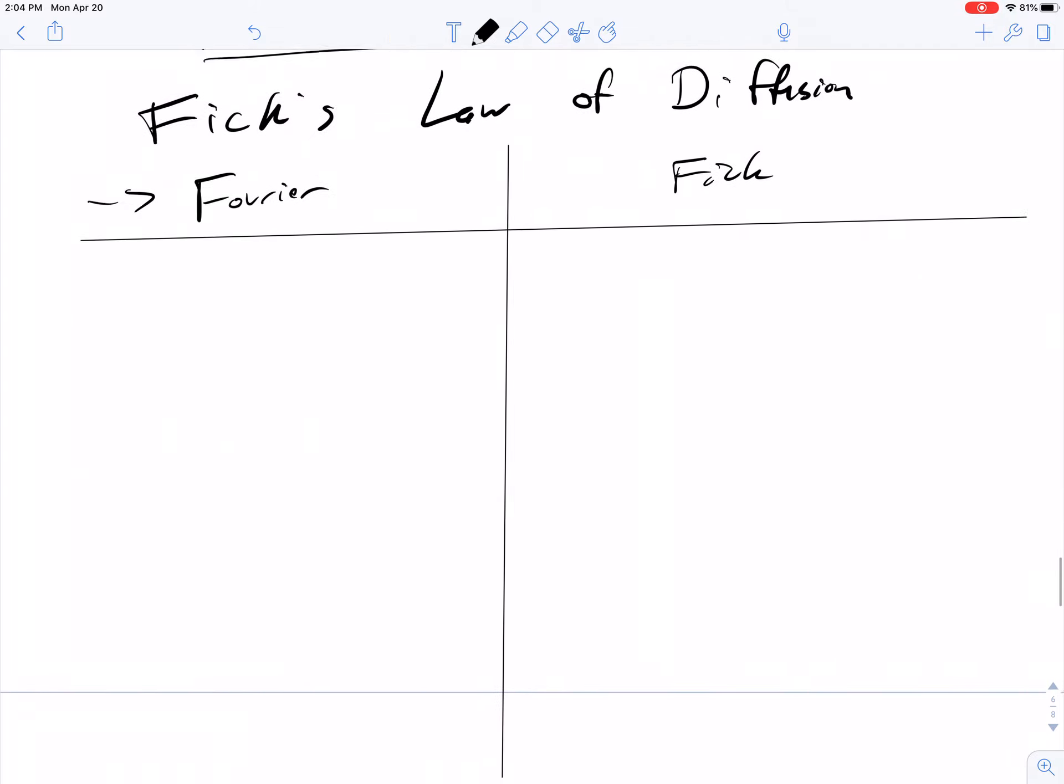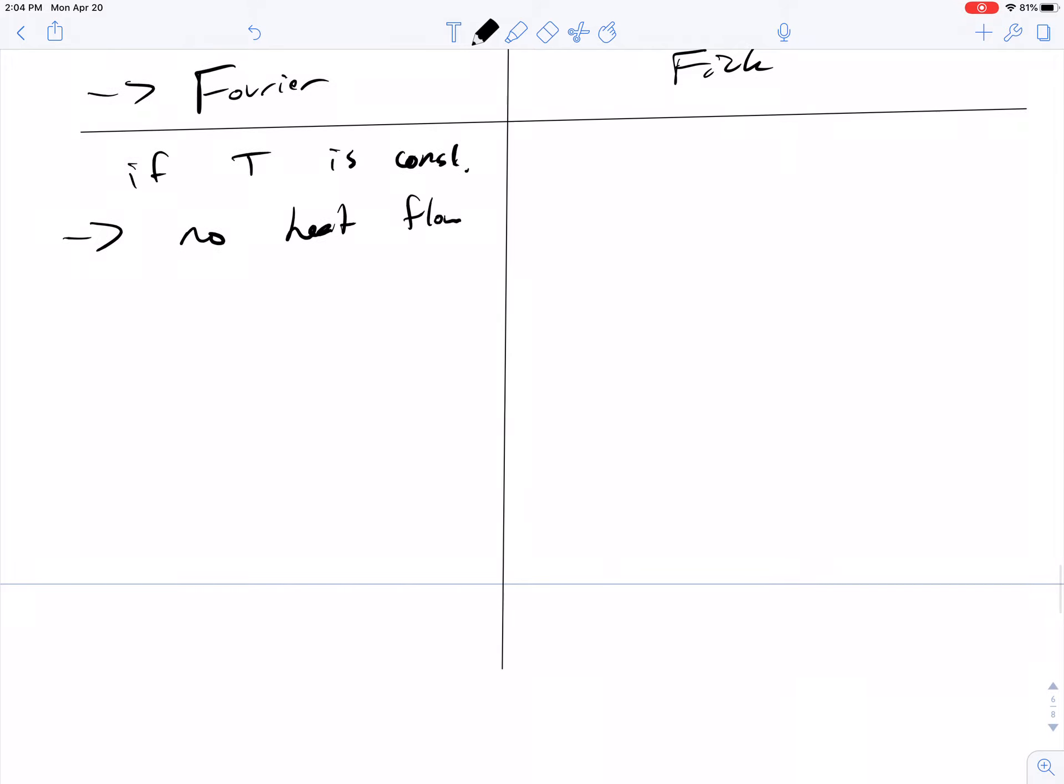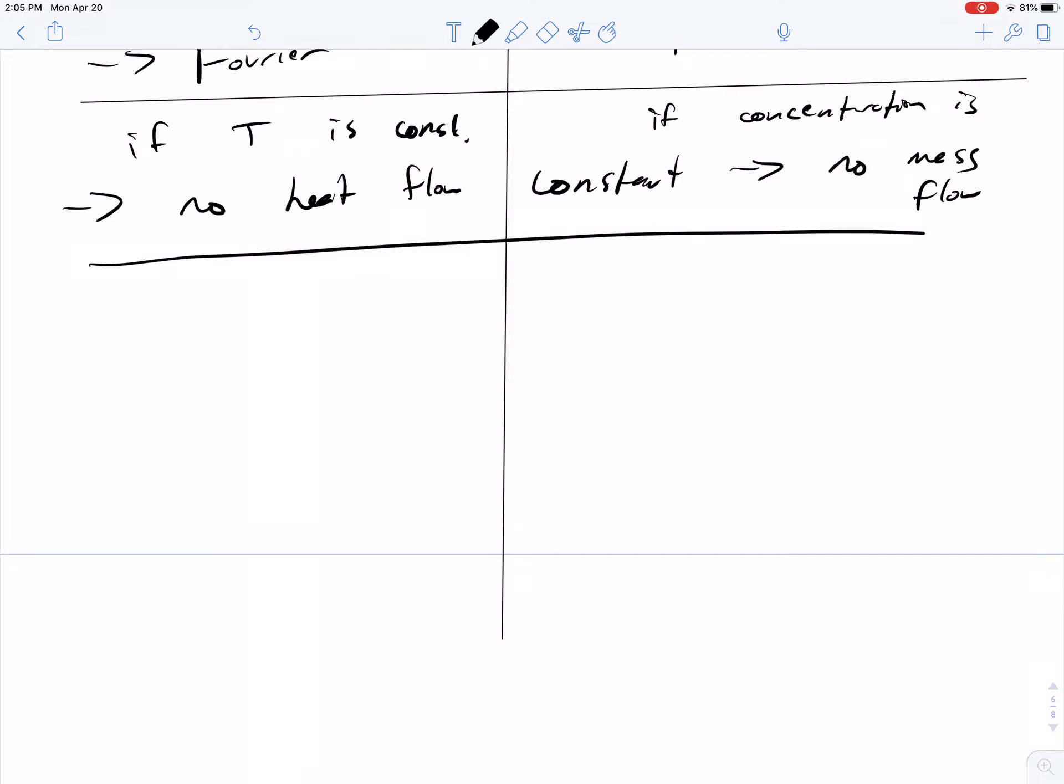Fourier noticed that if T is constant, there's no net heat flow. If concentration is constant, there's no net mass flow.